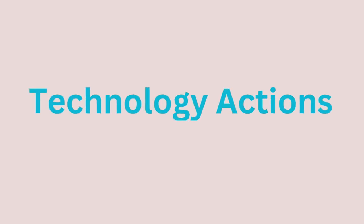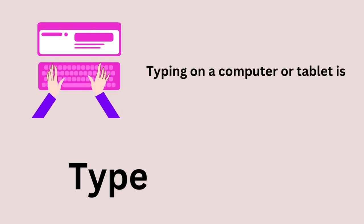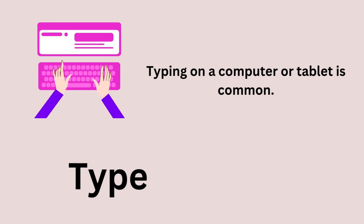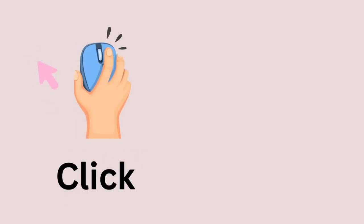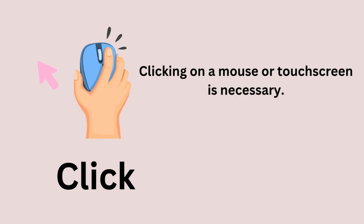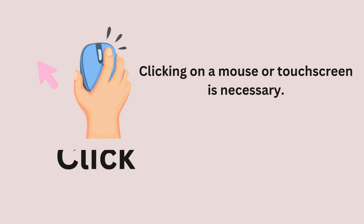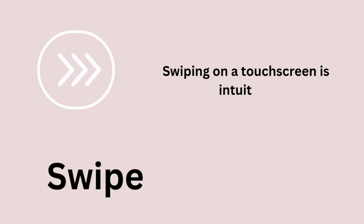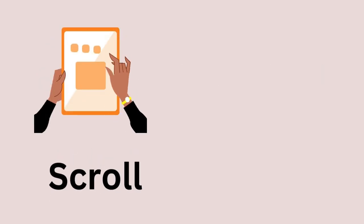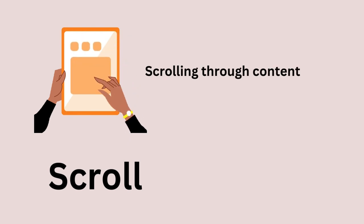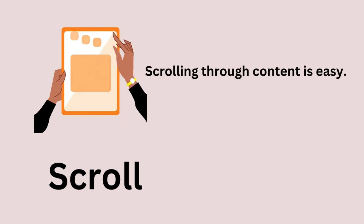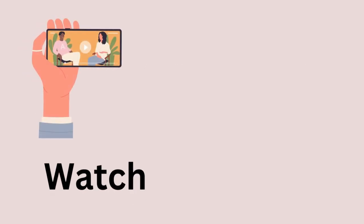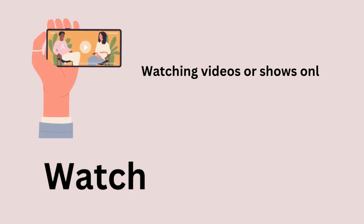Technology Actions. Type — typing on a computer or tablet is common. Click — clicking on a mouse or touch screen is necessary. Swipe — swiping on a touch screen is intuitive. Scroll — scrolling through content is easy. Watch — watching videos or shows online is entertaining.